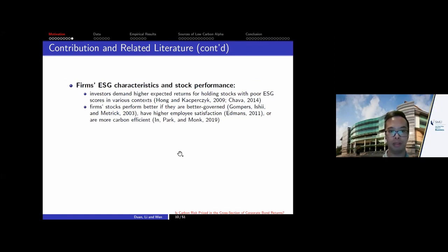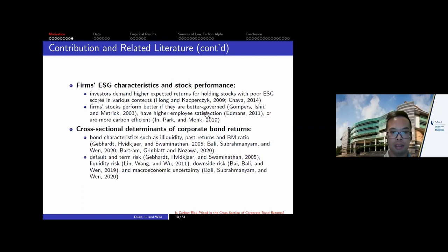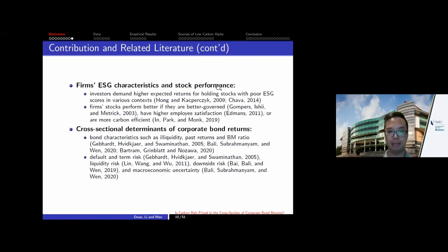We also contribute to the broader literature on how firms' ESG characteristics influence stock performance, where there is conflicting evidence. Some papers find that investors demand higher expected returns for poor ESG characteristics, while others find that high ESG scores are not fully recognized by the market and predict higher future stock returns. Lastly, our paper contributes to the cross-sectional determinants of corporate bond returns — prior literature emphasized illiquidity, default, term risk, downside risk, liquidity risk, and uncertainty risk — and we add carbon risk as a new dimension.